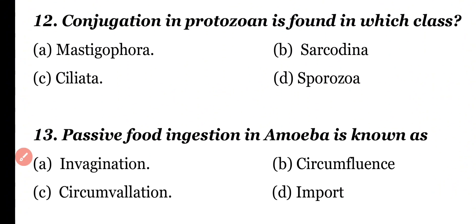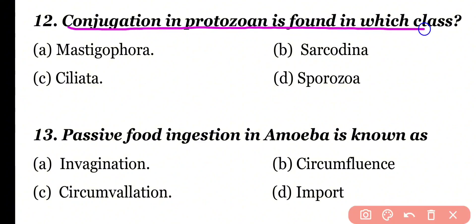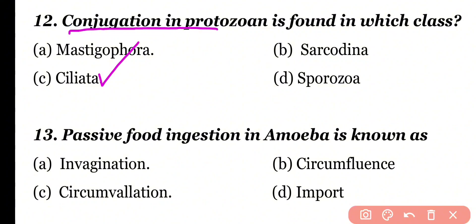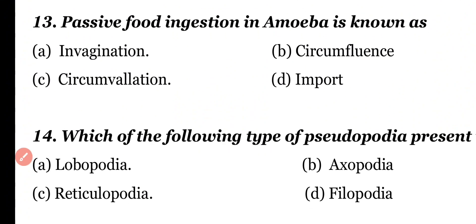Question number 12: Conjugation in Protozoa is found in which class? Mastigophora, Sarcodina, Ciliata, or Sporozoa? Correct answer is option C. Conjugation in Protozoa is mainly found in class Ciliata. Paramecium is sexually reproduced by means of conjugation.